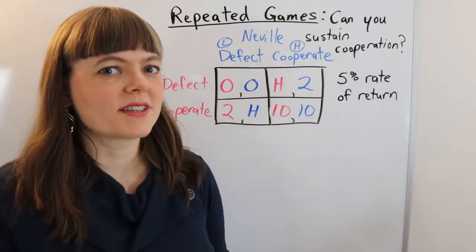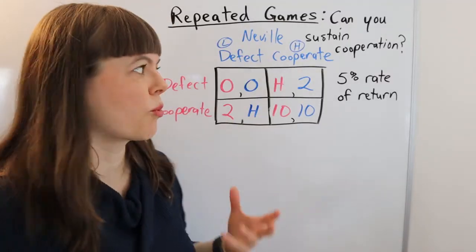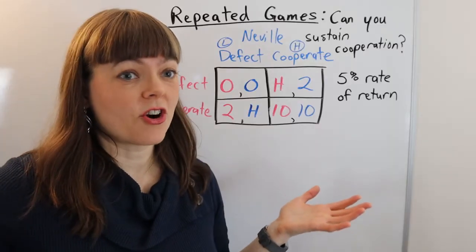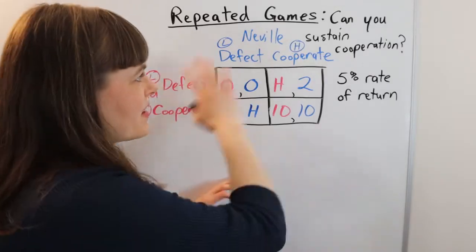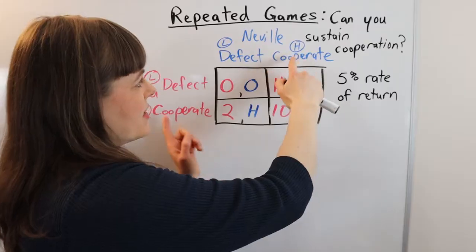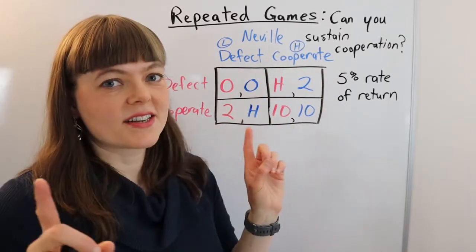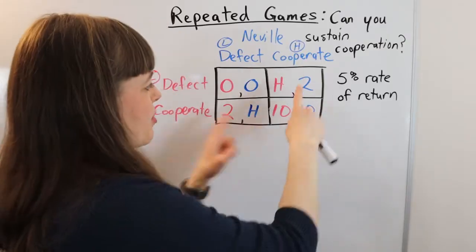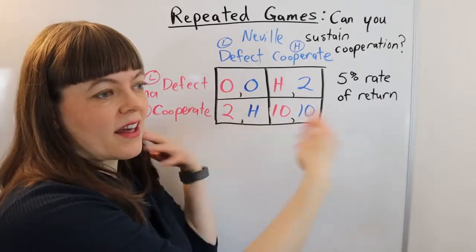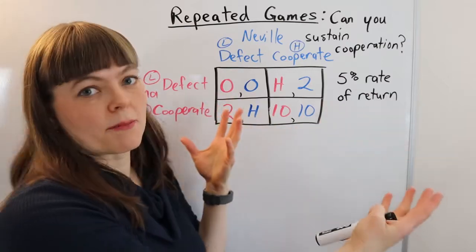There's a couple of reasons why this is so common in the real world. One is that prisoner's dilemmas are actually super common, and the classic example is if you have two competing firms in an oligopoly, they have to decide do they cooperate or collude and set the price high, in which case they both make a lot of money and split the market.